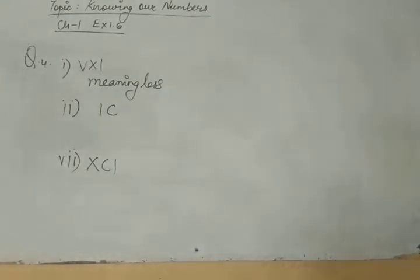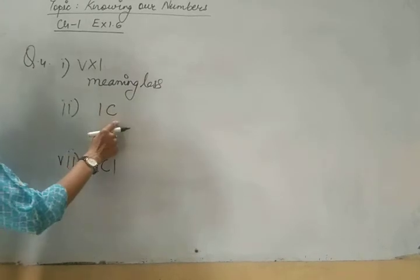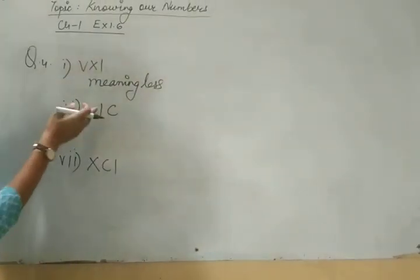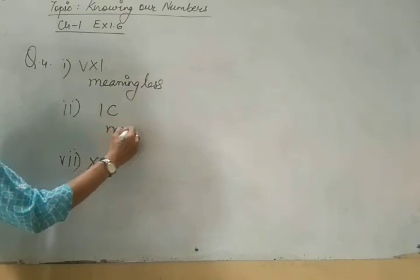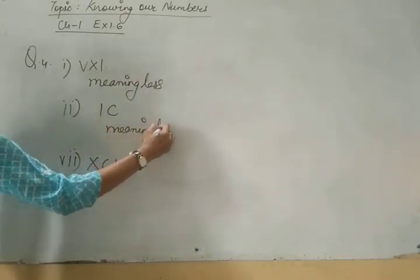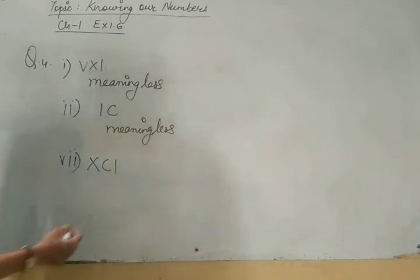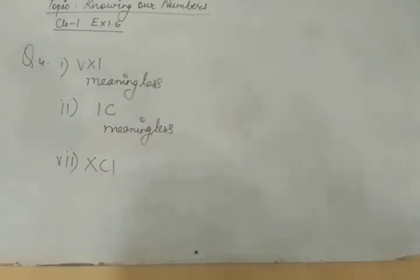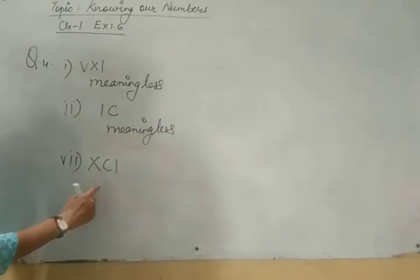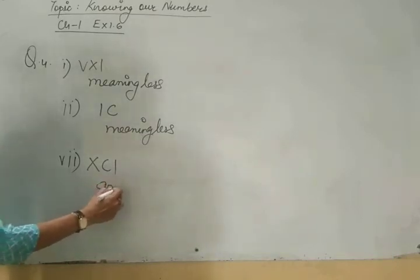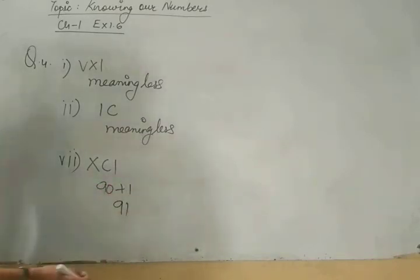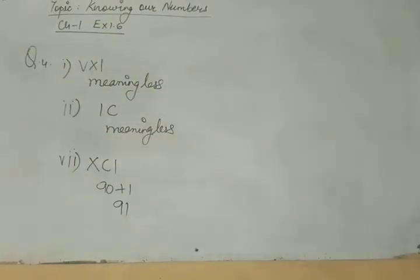Now second, IC. We can never write I before C. This is also meaningless. It has no meaning. Now XCI. C may se X minus karna hai. Matlab, 100 may se 10 minus karna hai. 90 plus 1. It is 91. It is meaningful. Clear?